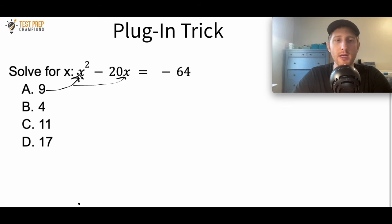So what is 9 squared? 9 squared is 81. What is 20 times 9? 20 times 9 is 180. So 81 minus 180 is negative 99 according to my calculator. Since we didn't get negative 64, let's eliminate A.